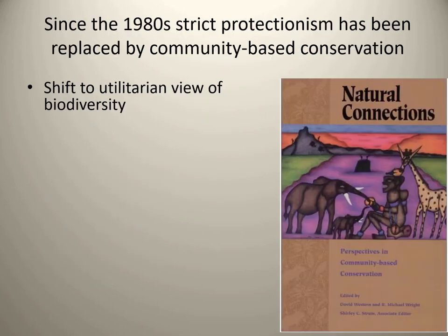Since the 1980s, throughout the history of conservation, the strict protectionism — fines and fences, the national park paradigm — has been replaced in many cases by something called community-based conservation, or CBC. Community-based conservation recognizes the rights as well as the value of including the local community, the local resource users whose very livelihoods depend on those environments. This reflects a shift to the utilitarian view of biodiversity.